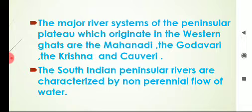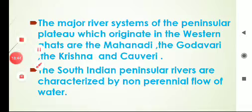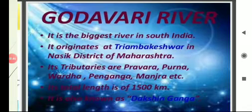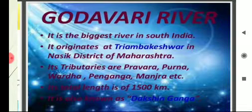South Indian peninsular rivers are characterized by non-perennial flow of water — they are not full of water throughout the year as they are rain-fed. In the rainy season they are full of water, but water in these rivers decreases in the summer seasons. Among the east-flowing peninsular rivers, Godavari river is the biggest river. River Godavari originates at Triyambakeshwar in Nasik district of Maharashtra.